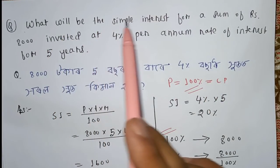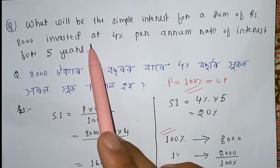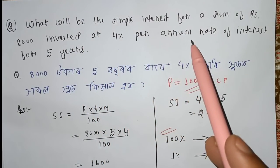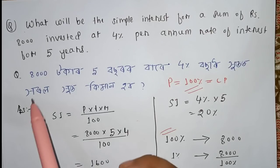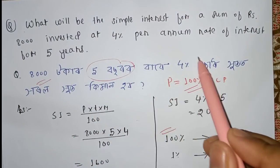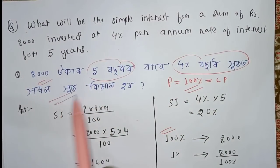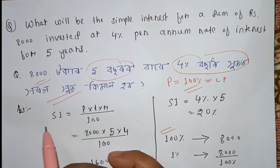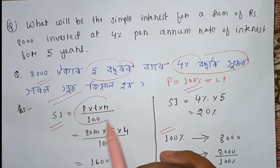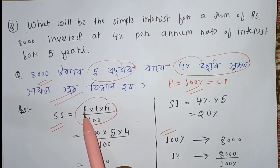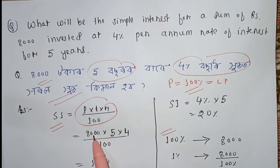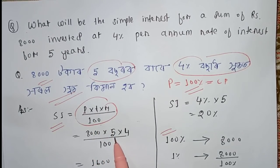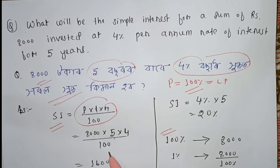What will be the simple interest for a sum of 8,000 invested at 4% per annum rate of interest for 5 years? In simple interest, you will have the formula P into T into R divided by 100. P means the principal amount of 8,000, T means the time of 5, and R means the rate of interest of 4, divided by 100.